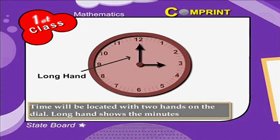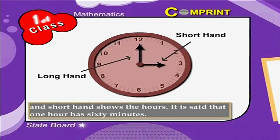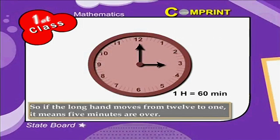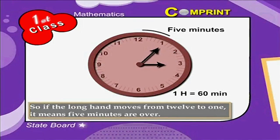The long hand shows the minutes and the short hand shows the hours. It is said that 1 hour has 60 minutes. So, if the long hand moves from 12 to 1, it means 5 minutes have passed.